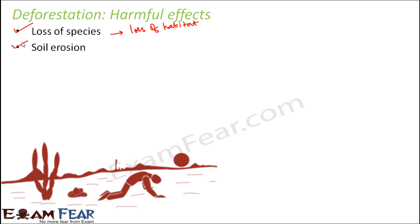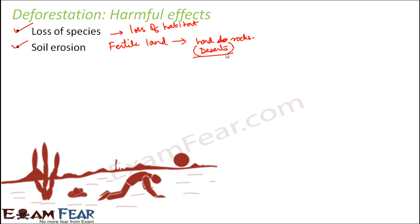When the soil gets carried away, the fertility of the soil is lost, because fertility depends on the presence of humus which is in the top layer of the soil. Once that layer is washed away, there is no humus and no fertility. When fertility is lost, the formerly fertile land gradually converts into hard rock. Over time, this results in the formation of deserts — that is, desertification of that area. Agriculture will no longer be possible there. So deforestation can lead to desertification.